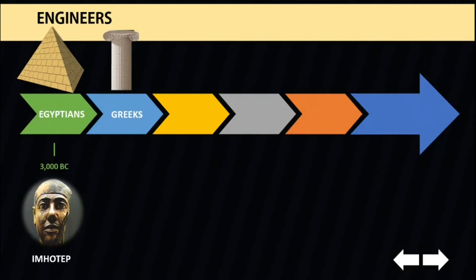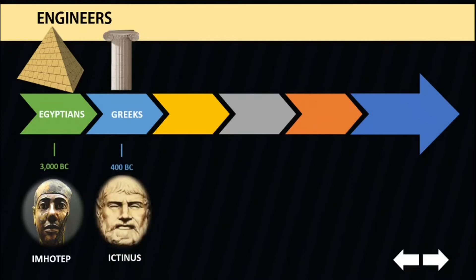Even at present times, where post and lintel construction has been replaced by steel and reinforced concrete frames, architects and engineers continue to impose the façade of the classical Greek temple on public buildings. One of the famous Greek builders is Ictinus, who created the Parthenon. He also created the Temple of Mysteries at Eleusis and the Temple of Apollo Epicurus at Bassae.